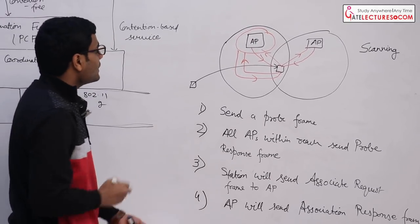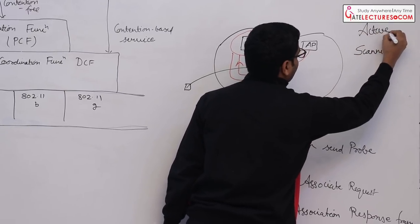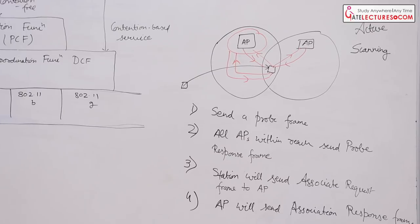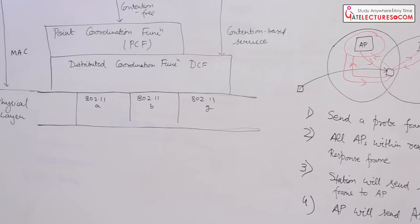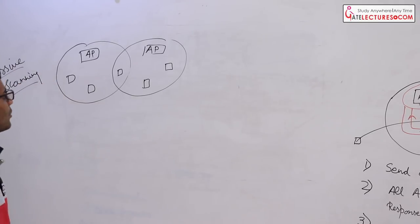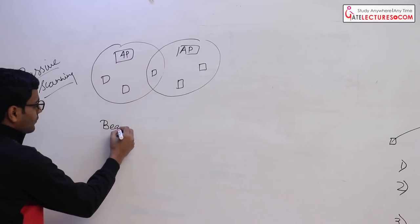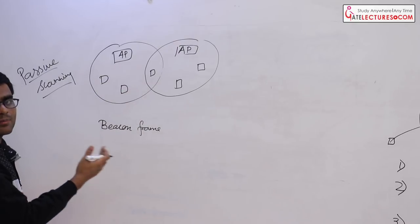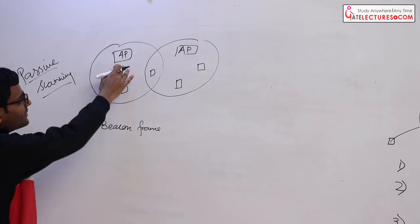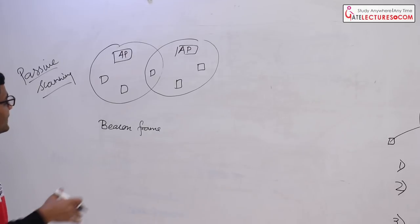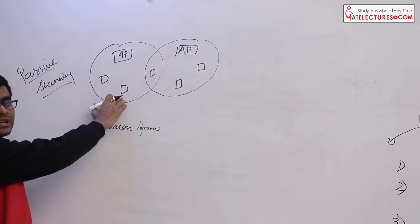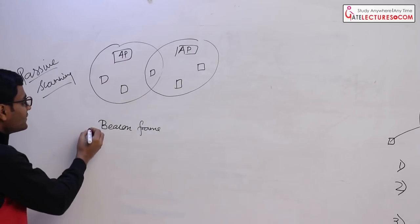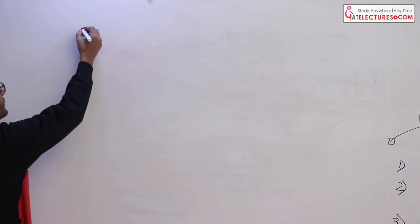This process is called active scanning because the station approaches the access point first and the access point replies. There is another kind of scanning called passive scanning. From time to time all access points send a beacon frame — it is an advertisement by the access point announcing its capabilities to each station. If a station wants to associate itself with an access point it can send an association request frame to that access point. This type of scanning is called passive scanning.